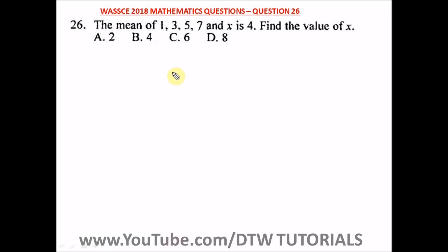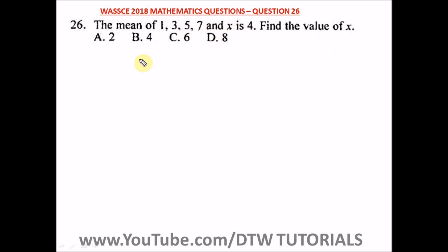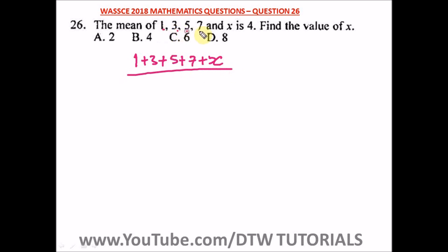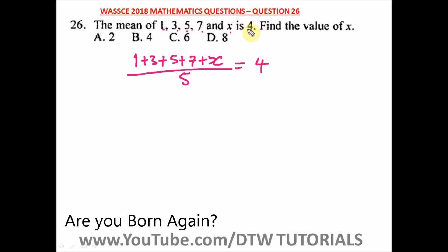Question 26 of the 2018 WAEC mathematics past question. It says the mean of 1, 3, 5, 7, and x is 4. Find the value of x. Remember the formula to find the mean — it's the average, which is the sum divided by the number of values. So we have 1 plus 3 plus 5 plus 7 plus x, divided by 5, equals 4.